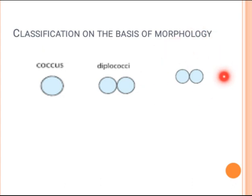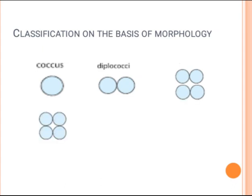When two more cocci attach just below diplococci on the second plane, it forms two-plane cocci, with an example being tetrad.